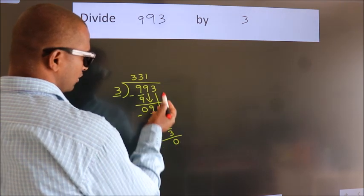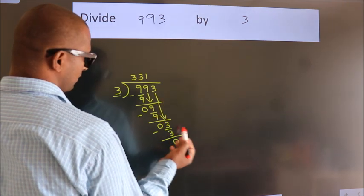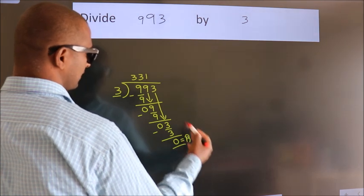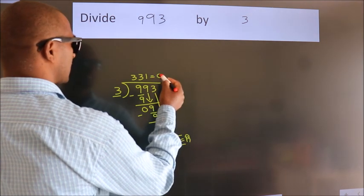After this, no more numbers to bring down. So we stop here. This is our remainder. This is our quotient.